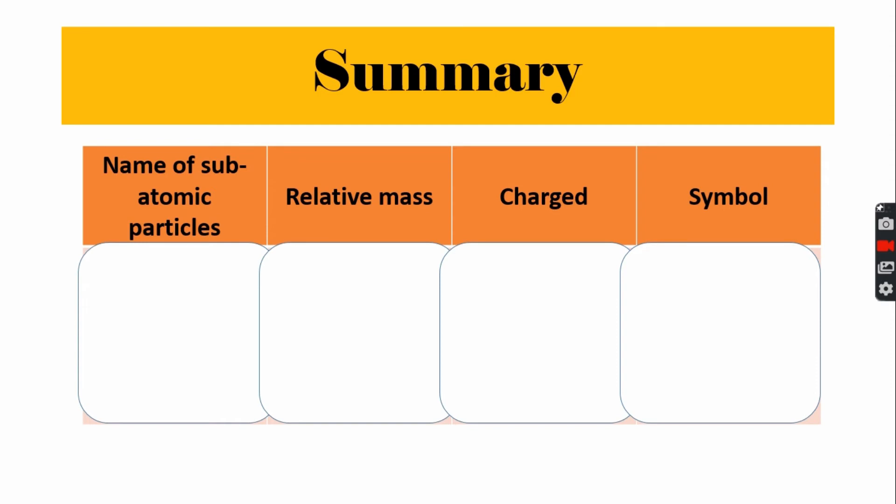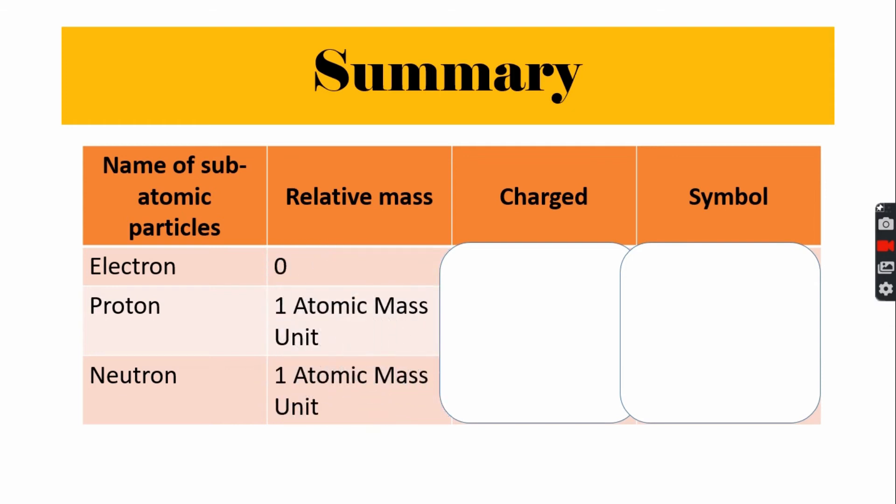What are the subatomic particles of atoms? Yes, they're electron, proton, and neutron. And you'll find more if you continue to learn chemistry. And here are the rest: their mass, their charge, and their symbol.